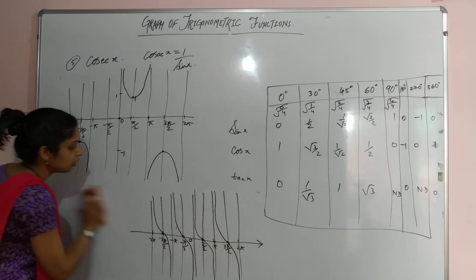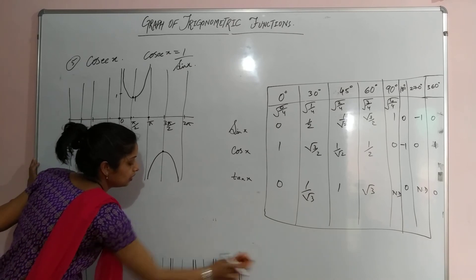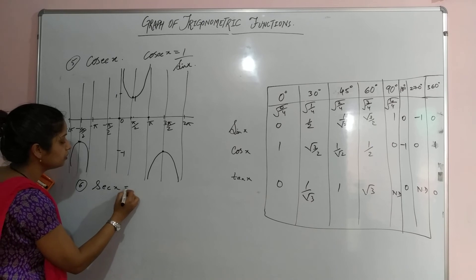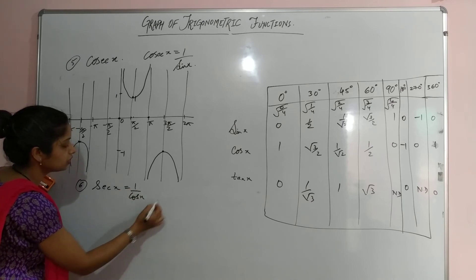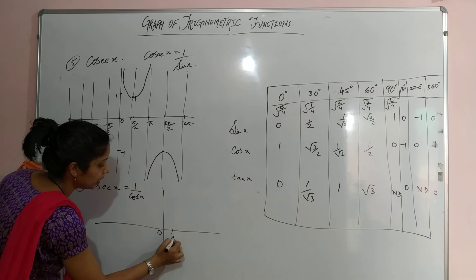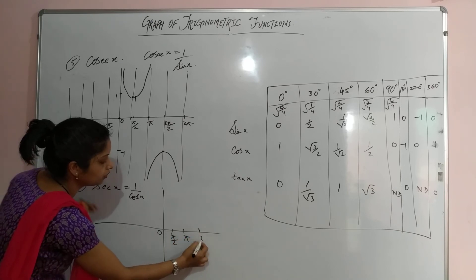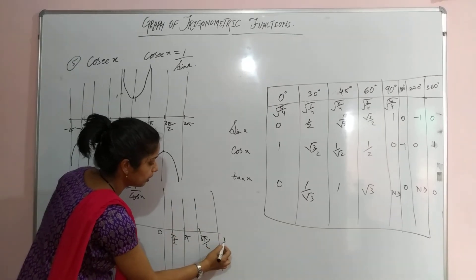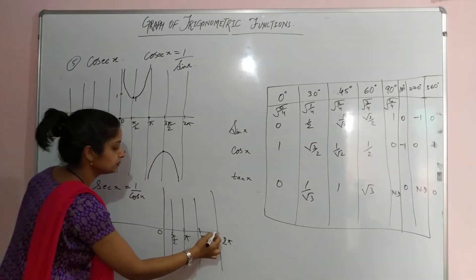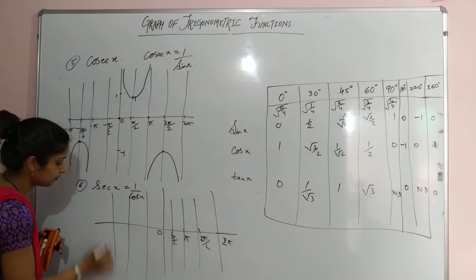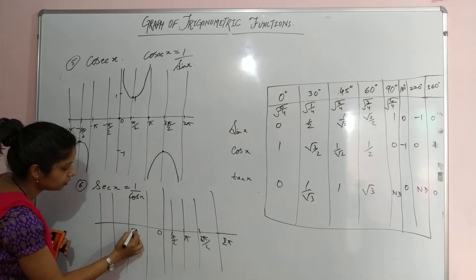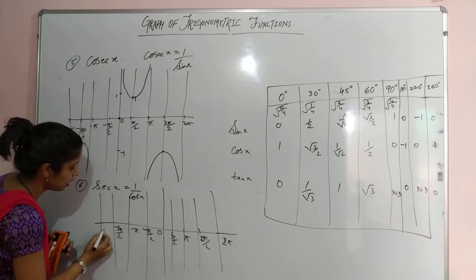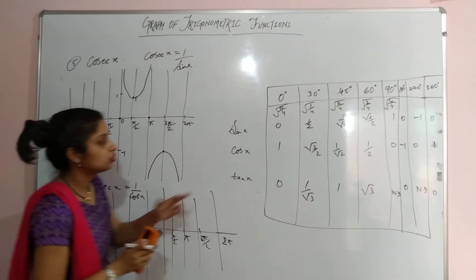Now for the sixth function, sec x, which is the reciprocal of cos x. Set up the axes with 0, π/2, π, 3π/2, 2π, and the negative side: −π/2, −π, −3π/2, and −2π.